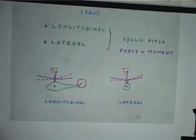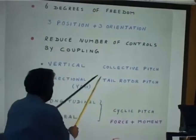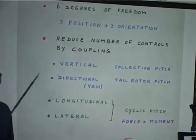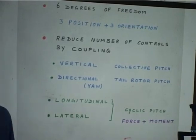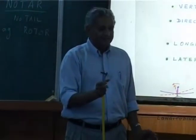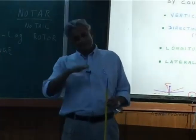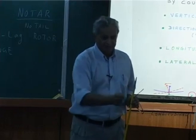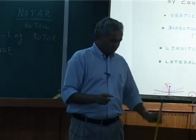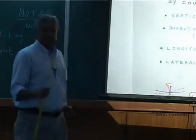We had collective pitch, tail rotor pitch, and cyclic pitch. We will explain what cyclic pitch is and how it is given. The pilot has a stick in front — moving it forward makes the helicopter go forward, moving it lateral makes it go sideways, moving it back makes it go back. He can move the stick in any direction 360 degrees. So left hand, right hand, and both legs are all engaged for the pilot to fly. I think I will leave you now — that will close today's lecture.